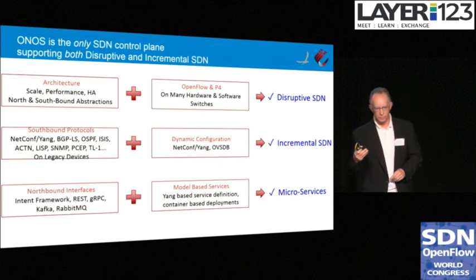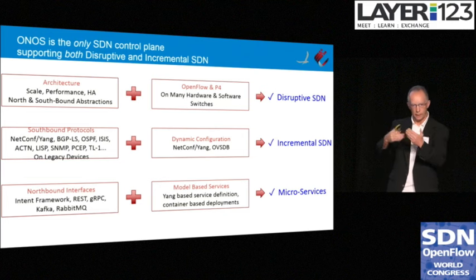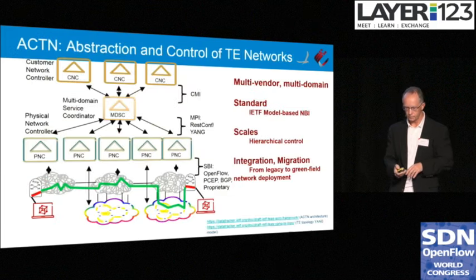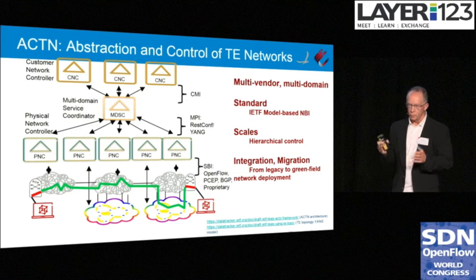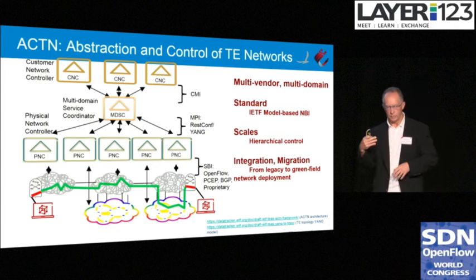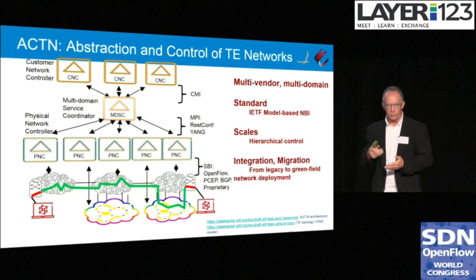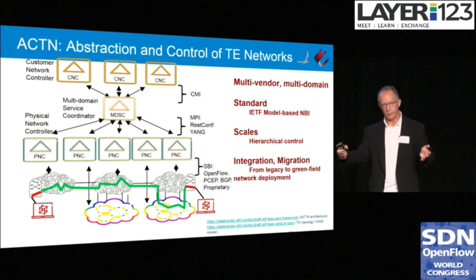We also need model-based services, whether through Tosca or Yang — the ease of defining a service in your operator system and having that create a model, or taking a standard model and feeding it in so the right things can be done in the network. Today there exist a number of traffic-engineered networks that may be disparate, and you have to manage them as one. There's a standard way to do that called Abstraction and Control of TE Networks from IETF. The importance of such a solution is that it's multi-vendor, multi-domain, standards-based, and provides a migration mechanism.